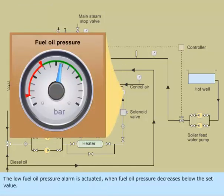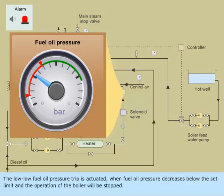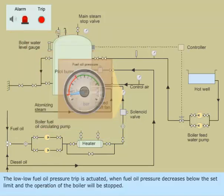The Low Low Fuel Oil Pressure Alarm is activated when fuel oil pressure decreases below the set value. The Low Low Fuel Oil Pressure Trip is activated when the fuel oil pressure decreases below the set limit and the operation of the boiler will be stopped.